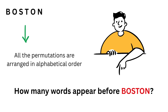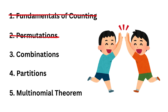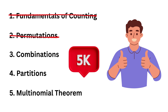If you were not able to solve it, try the word BOSTON using the same logic and let me know in the comments how many words appear before BOSTON when all its permutations are arranged in alphabetical order like in a dictionary. We will continue with other topics like combinations, partitions, and the multinomial theorem in the next video of this series.